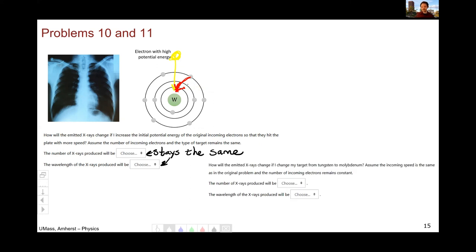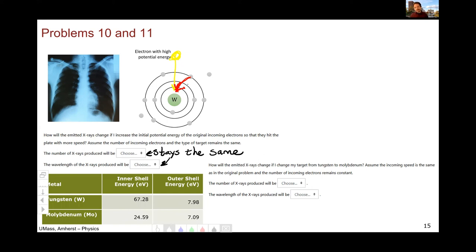Now, if I went from tungsten to molybdenum, what's going to happen? Well, once again, the number of X-rays isn't going to change. One incoming electron yields one X-ray going out. So the number of electrons will remain the same. But the wavelength will get longer. Why will the wavelength get longer? Well, the difference in energy for molybdenum is smaller than that for tungsten.